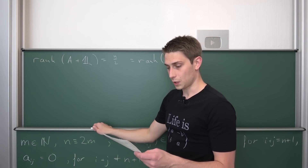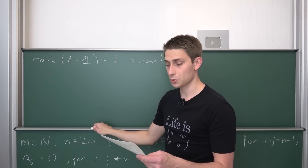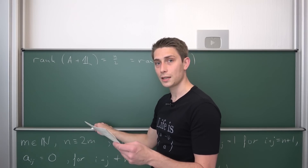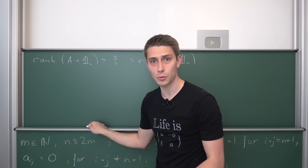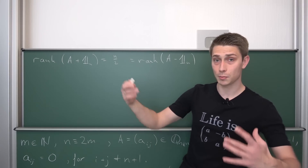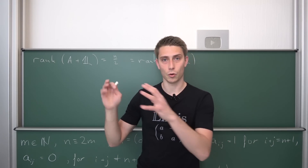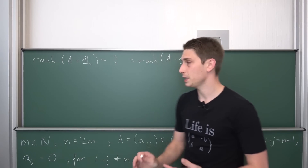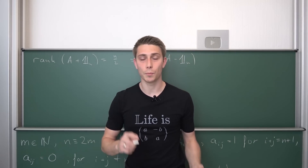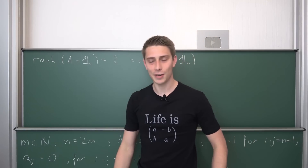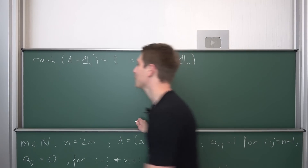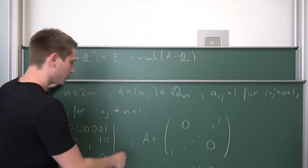Next, we need to show that A has eigenvalues positive and negative 1, and that A is diagonalizable over ℚ. Lastly, we want to calculate the characteristic polynomial. I'm going to do the characteristic polynomial first because it makes everything easier. If you know the characteristic polynomial, you also know the algebraic multiplicity of your eigenvalues, and then you can talk about diagonalizability.